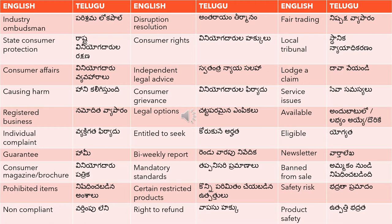'Bi-weekly report' means 'rendu varapu nivedika' — 'bi-weekly' means something that occurs in two weeks, and 'nivedika' means report. 'Newsletter' means 'varta lekha'. In dialogues they may say this is a government newsletter updated bi-weekly, so in that case you will use 'varta lekha' for newsletter.